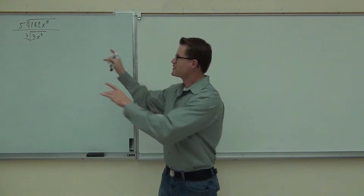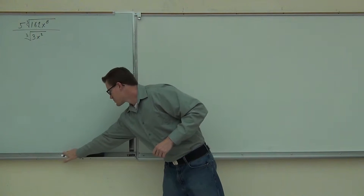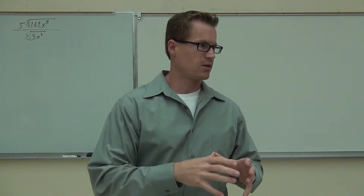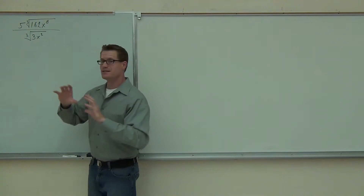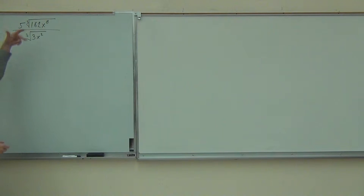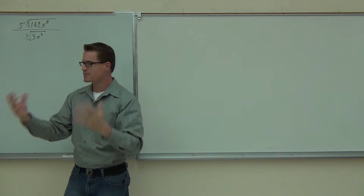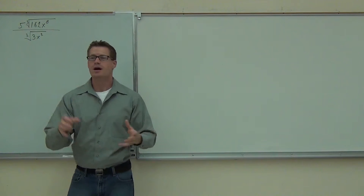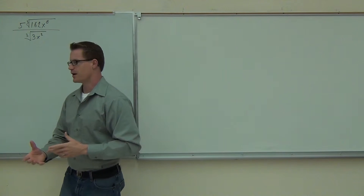Last time we were still talking about radical expressions, and what we realized is that in order to combine or simplify these radical expressions, the first thing you have to do is combine them. We never want to simplify the numerator, simplify the denominator, and then combine them, because you're going to have to re-simplify it all over again. The last couple examples were: combine those radicals first using the quotient rule, and then simplify them.